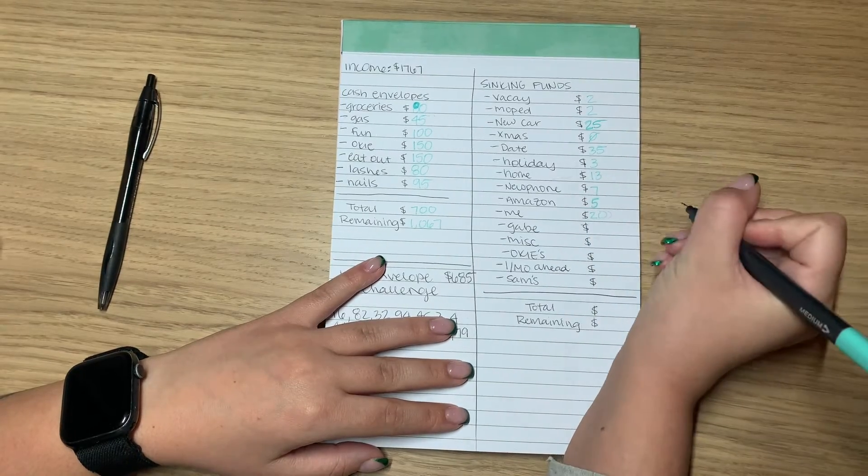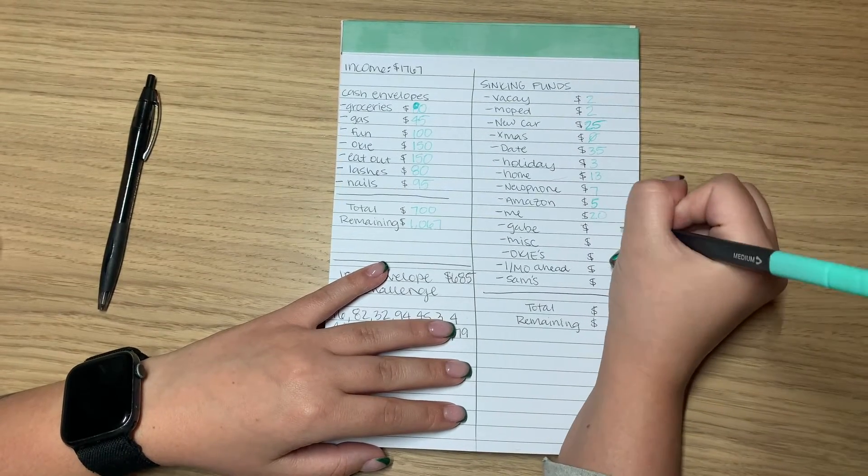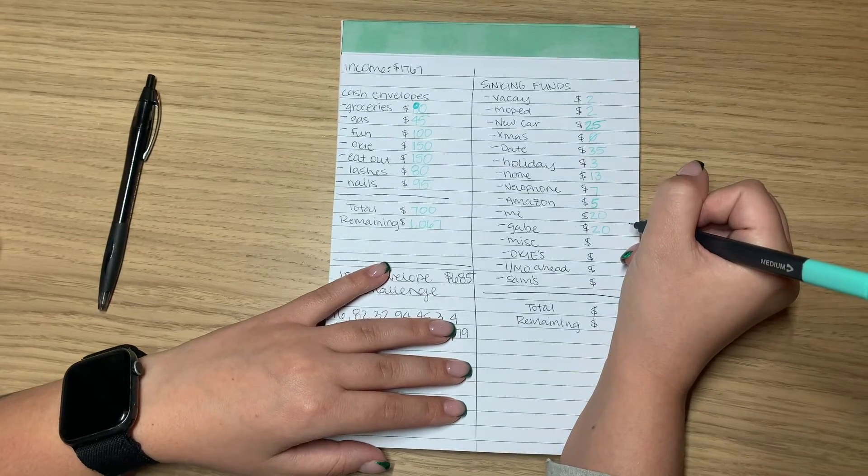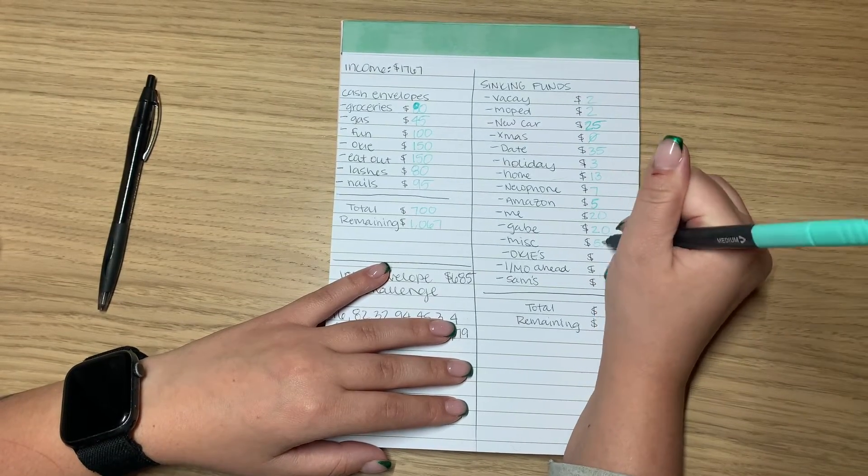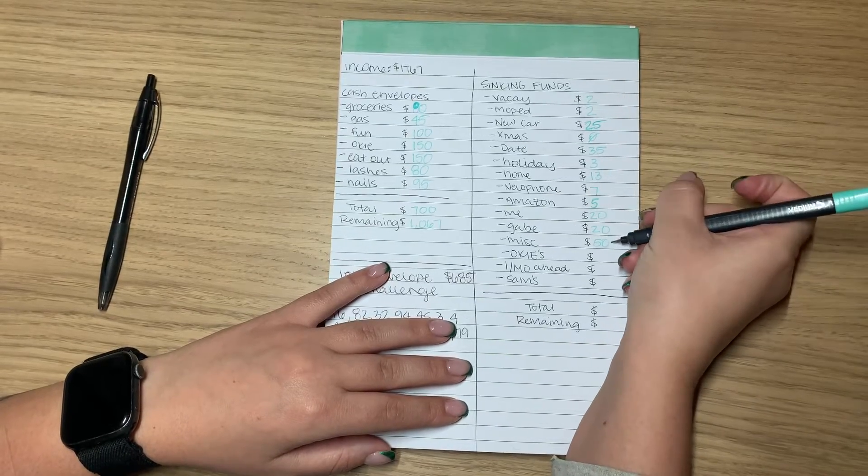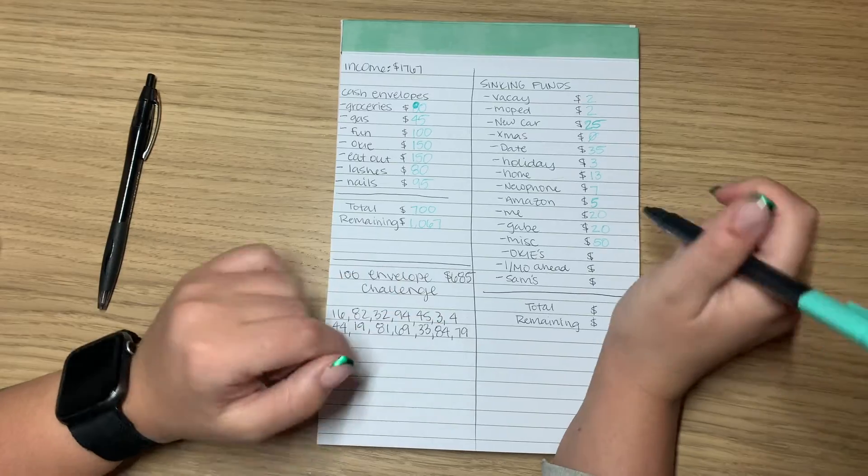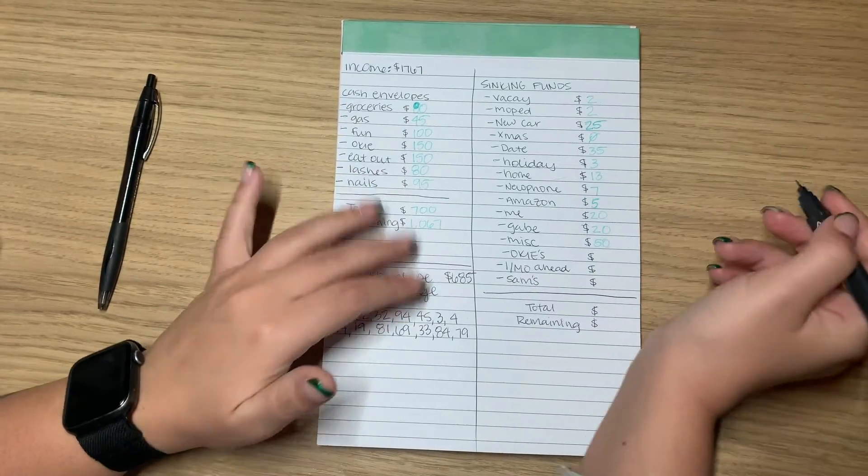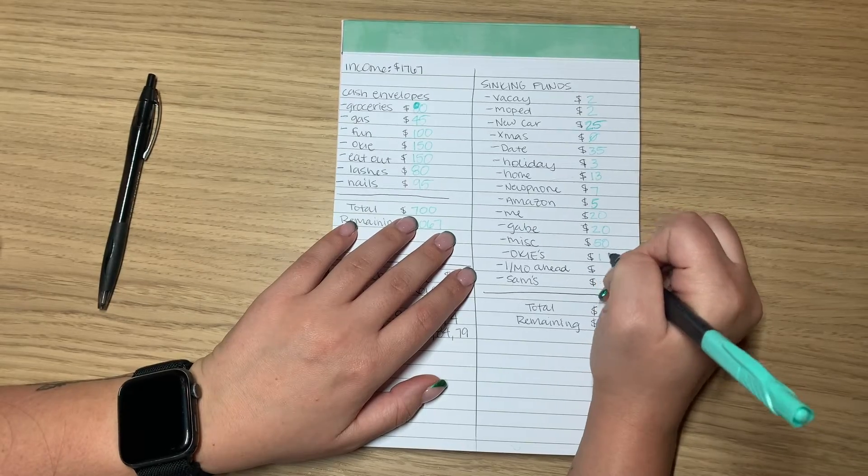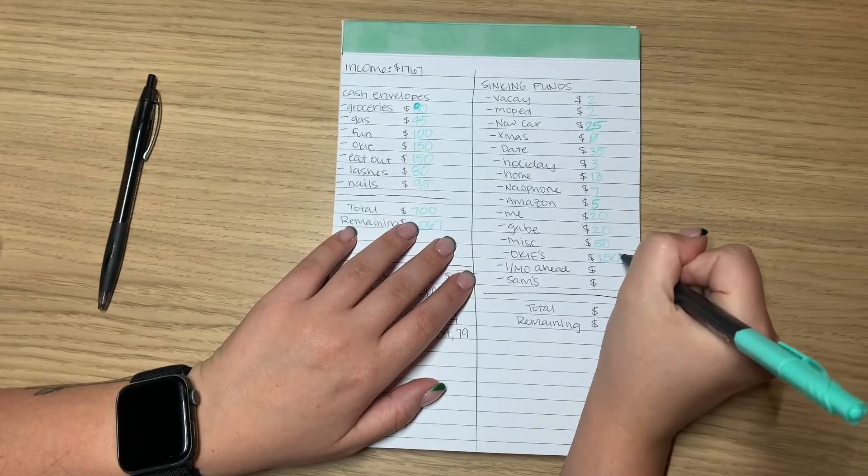Me is getting $20. Gabe is getting $20. Miscellaneous $50. I decided to up this one because I spent this in pretty quick. And if I can, might as well bump it up so I'm not spending on a credit card. And then Oki is getting $150 in his emergency.